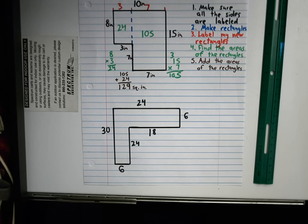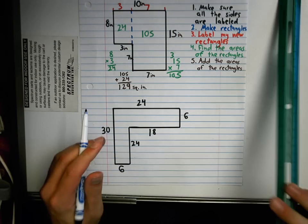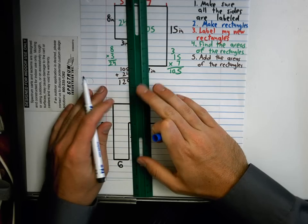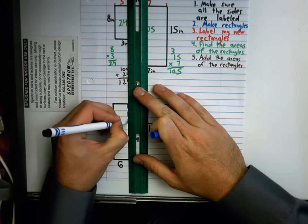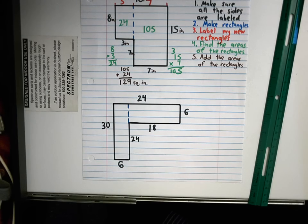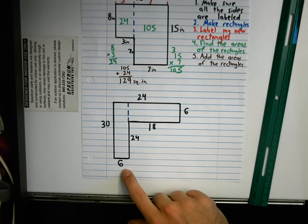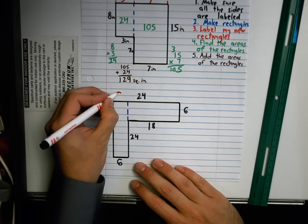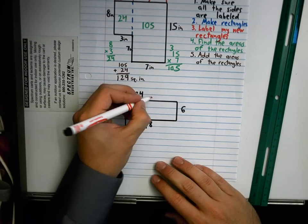My new rectangles are going to be right here. Bam. I know this is 6. So when I label my new rectangles, if this one is 6, this one has to be 6. And if this is 18, this one has to be 18.